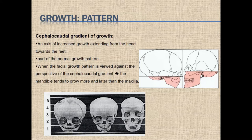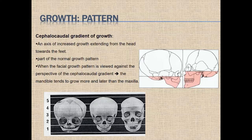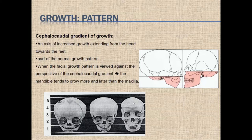As the cranial part is taking more than half at early stages of development, as we go further it takes less proportion. The maxilla starts to take over, and finally at adulthood the mandible takes over. The cranium finishes growth first, the maxilla finishes later, and the mandible grows furthest and latest. This differential growth is called the cephalocaudal gradient of growth.